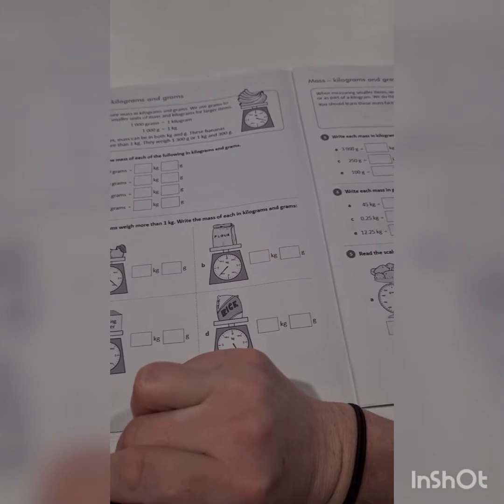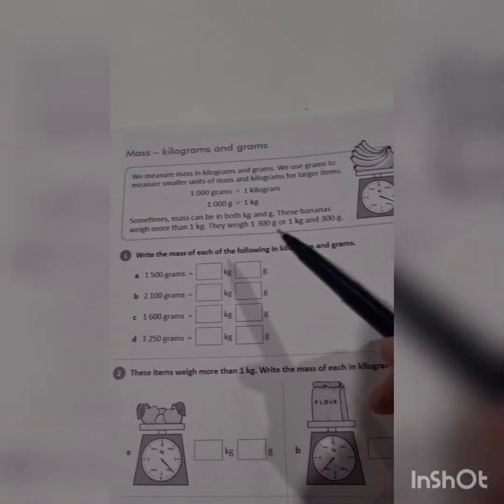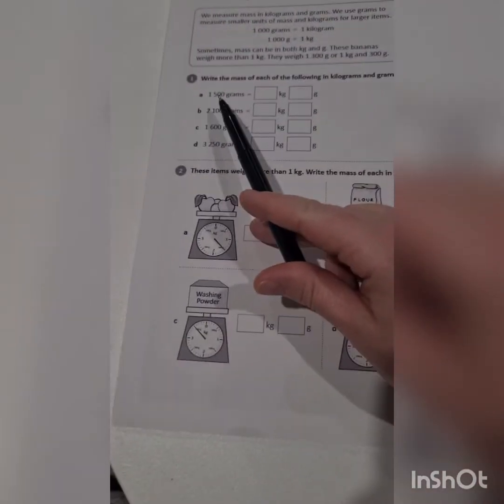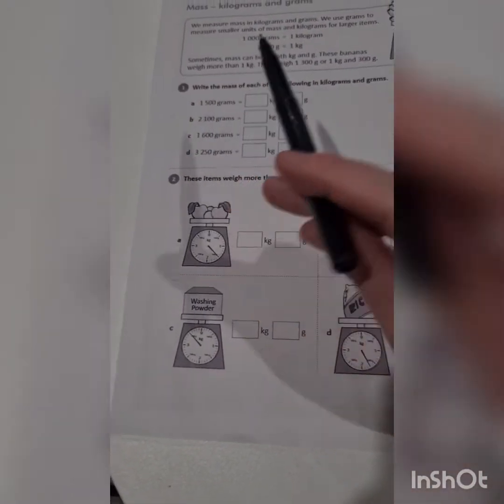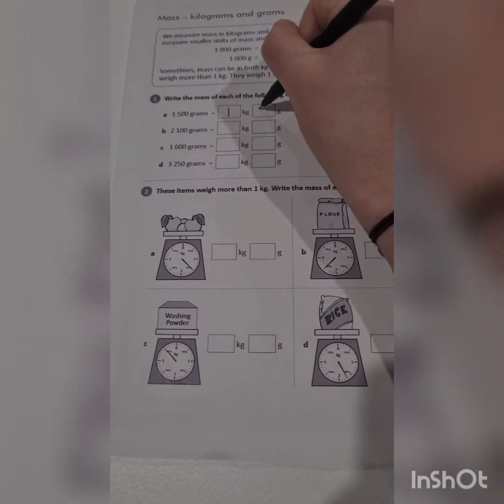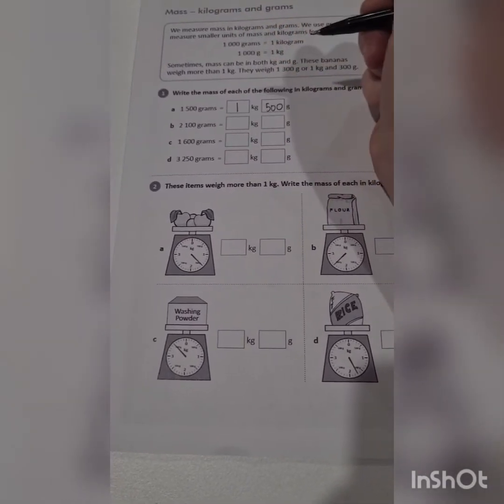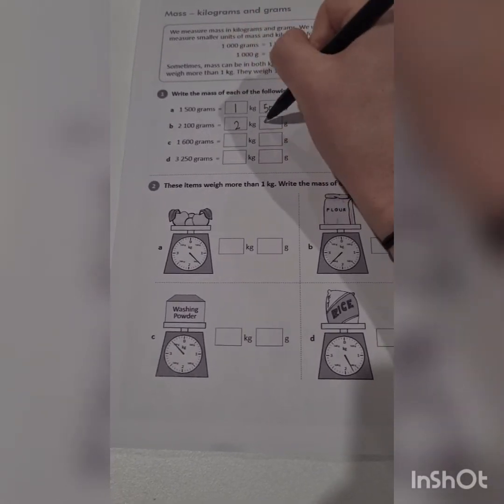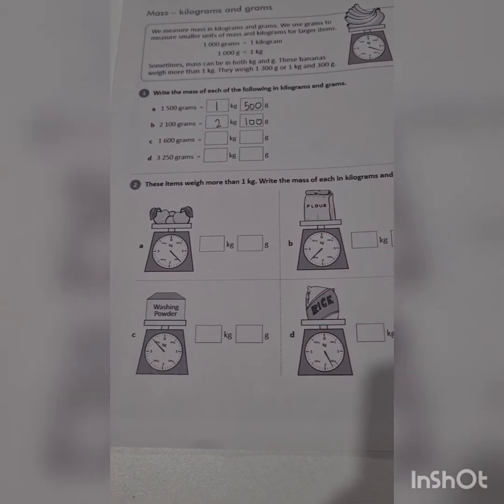So we can see from the top that 1,000 grams equals 1 kilo. How many thousands are in this number? There is just 1,000 and 500 grams left over. How many thousands are in this number? There are 2,000 and 100 grams left over.